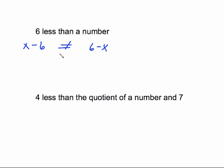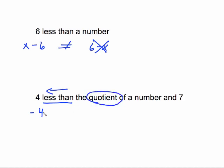'Four less than the quotient of a number and seven' — starting from the left, four: as soon as I see 'less than' I go in reverse order, putting the minus sign and working backwards. What goes in front of that minus is the quotient: quotient means divide, write it as a fraction bar. The number goes on top since it came first, then seven on the bottom. So the expression is x/7 − 4.